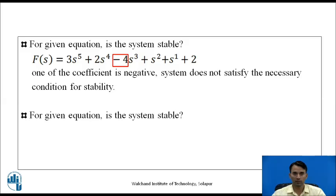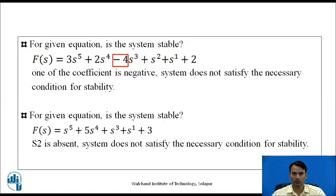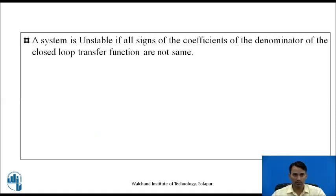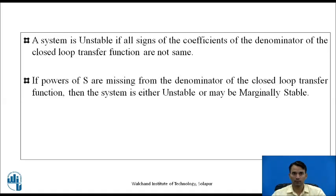For another example, observe the given equation — all powers of s are present but s squared is absent, so the system does not satisfy the necessary condition for stability. A system is unstable if all signs of the coefficients of the denominator of the closed loop transfer function are not the same, and if powers of s are missing from the denominator, then the system is either unstable or sometimes marginally stable.